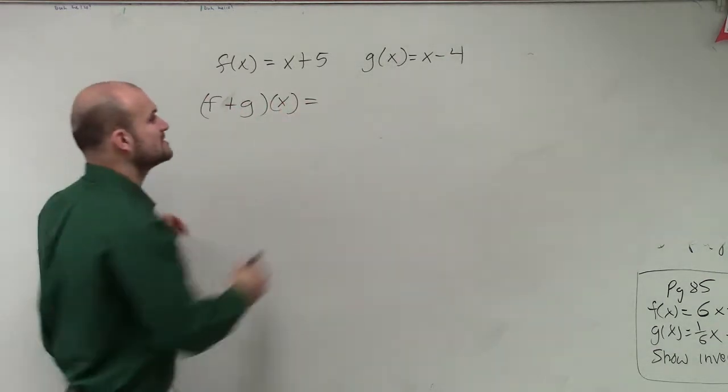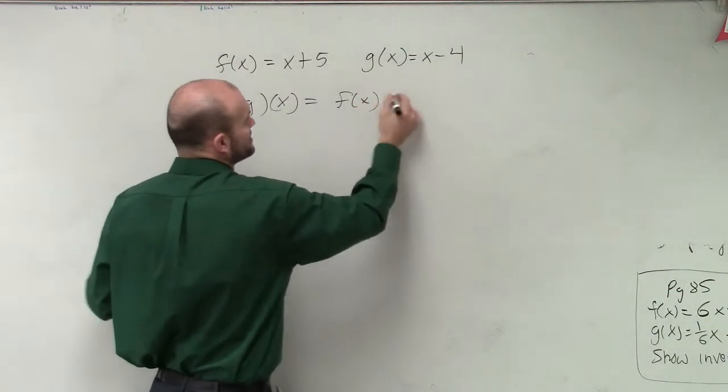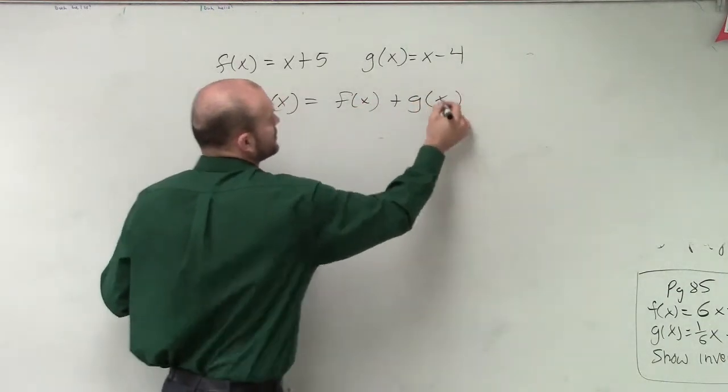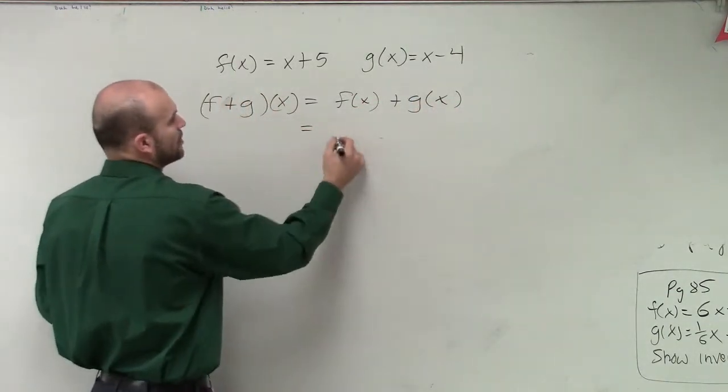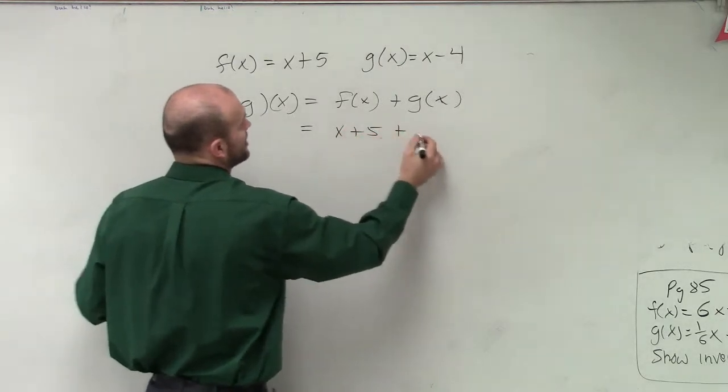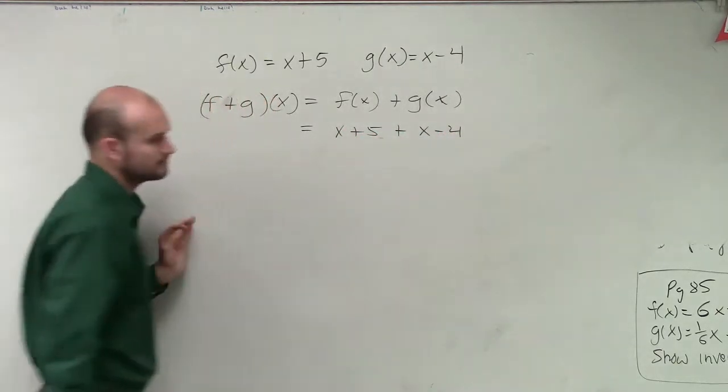So therefore, ladies and gentlemen, all we simply need to do then is take our f of x function and add it to our g of x function. Therefore, we're going to get x plus 5 plus x minus 4. Right?